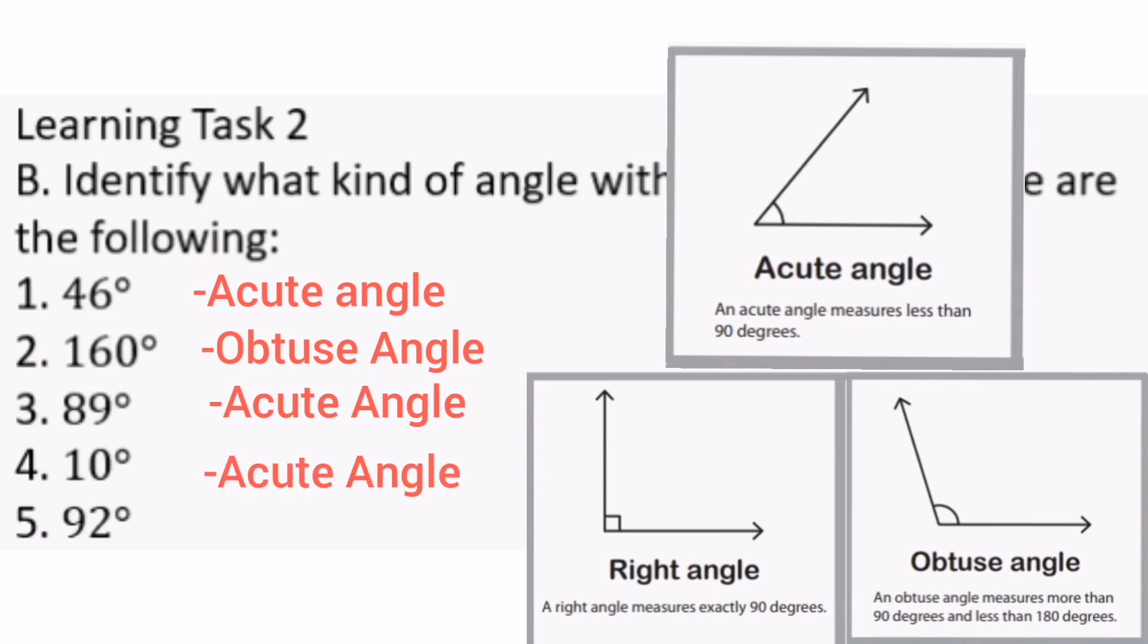Number 5, 92 degrees is greater than 90 degrees, so it is an obtuse angle.